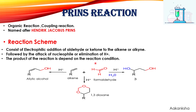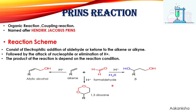This is followed by the attack of a nucleophile, giving an alcohol as product. By the elimination of H⁺, we get the allylic alcohol, or by excess of formaldehyde we get 1,3-dioxane. The outcome of the reaction depends upon the reaction conditions — we can get a product as the allylic alcohol, simple alcohol, or 1,3-dioxane.